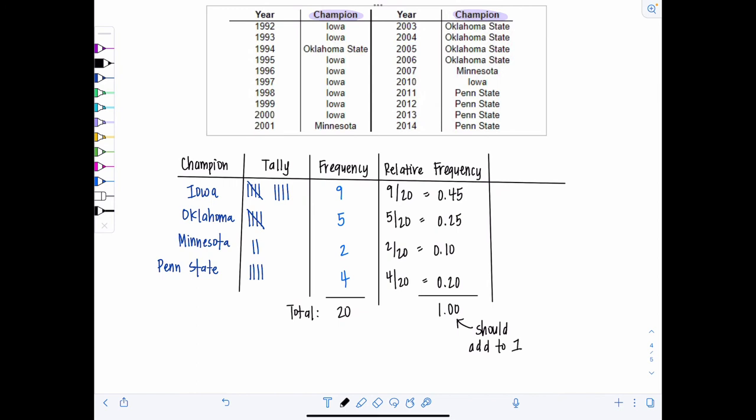If you add up all the relative frequencies, notice 0.45 plus 0.25, that's 0.7 plus 0.1 plus 0.2 gives you 1.00. These should always add to one. Exactly one, if you don't round. If you have a little bit of rounding every now and then, you might have some rounding error in your total, but all of the relative frequencies should be pretty dead on when you add them up. And then one more thing that we could easily compute since we have the relative frequencies is percent. So just multiply each of those relative frequencies by 100. So Iowa would be 45%, Oklahoma 25%, 10% for Minnesota, and then Penn State 20%. And if you add up all the percents, you should get 100.